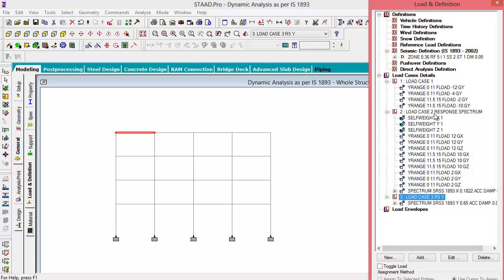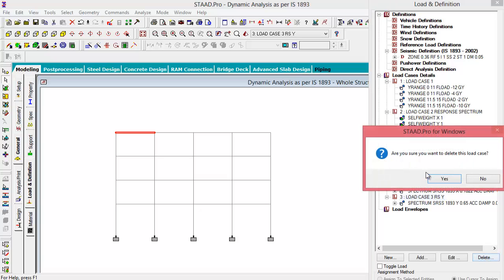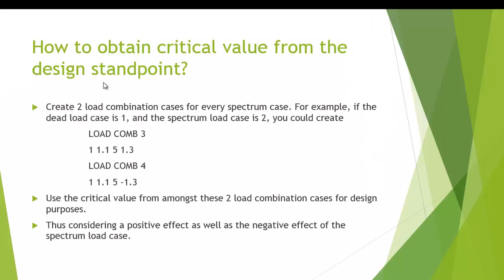STAAD will automatically consider all the loads, that is dynamic loads that we have defined in the previous load case. Similarly, if you want to specify a spectrum load case in Z direction, you will have to define another load case number 4 with a spectrum command in Z direction with the direction factor that you need. I am deleting this command for the time being. We have completed performing the response spectrum analysis.